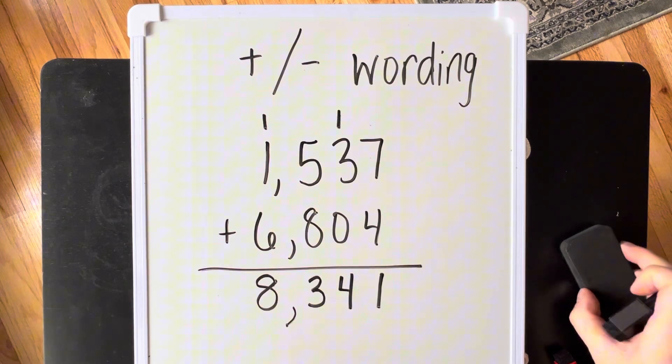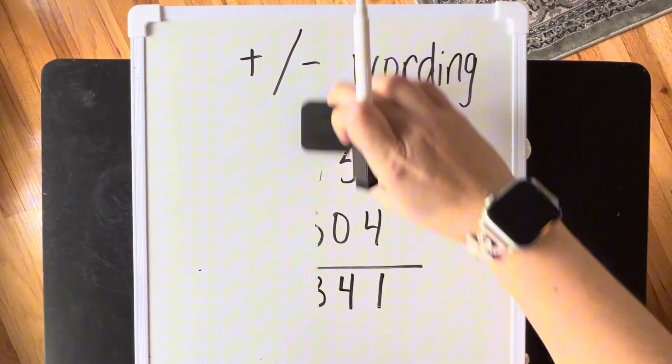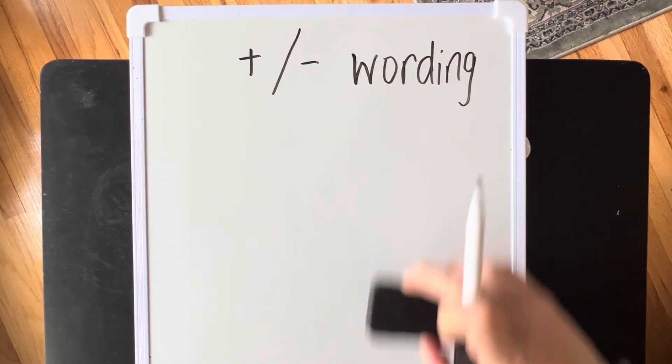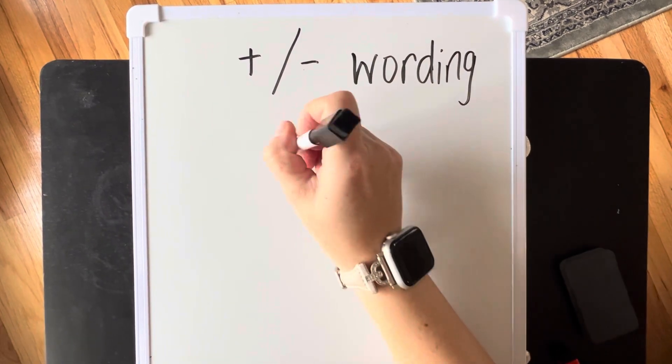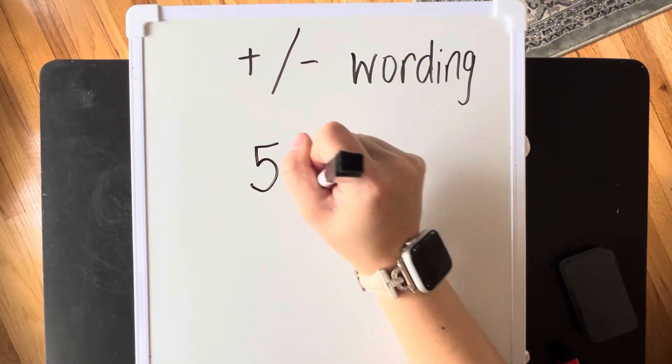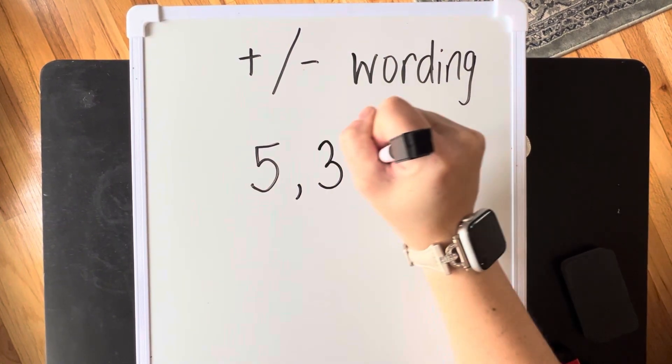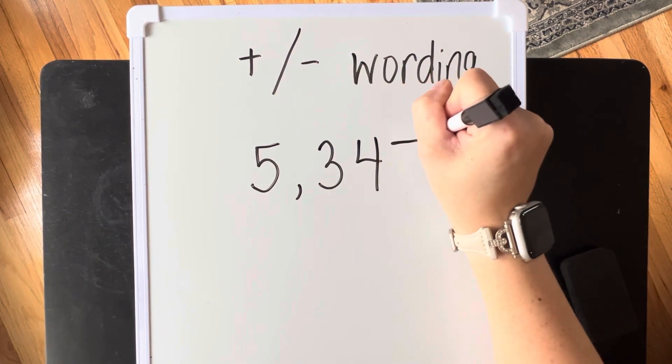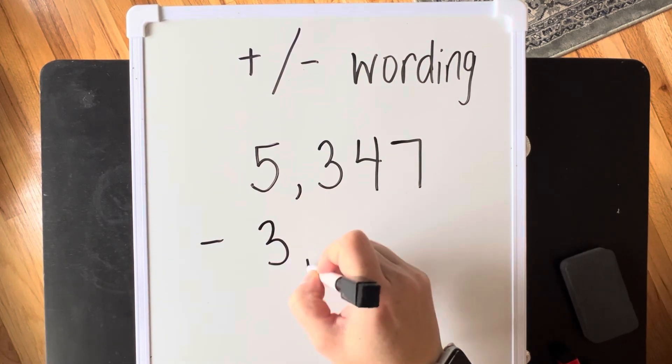Now, for subtraction, we are still going to use our regrouping wording. We do not borrow anymore. Borrowing says we're going to give it back, but that's not what we're doing. So we are going to regroup our tens and our ones if we need to. And we are going to come up with a kind of a sing-songy way of remembering our steps.